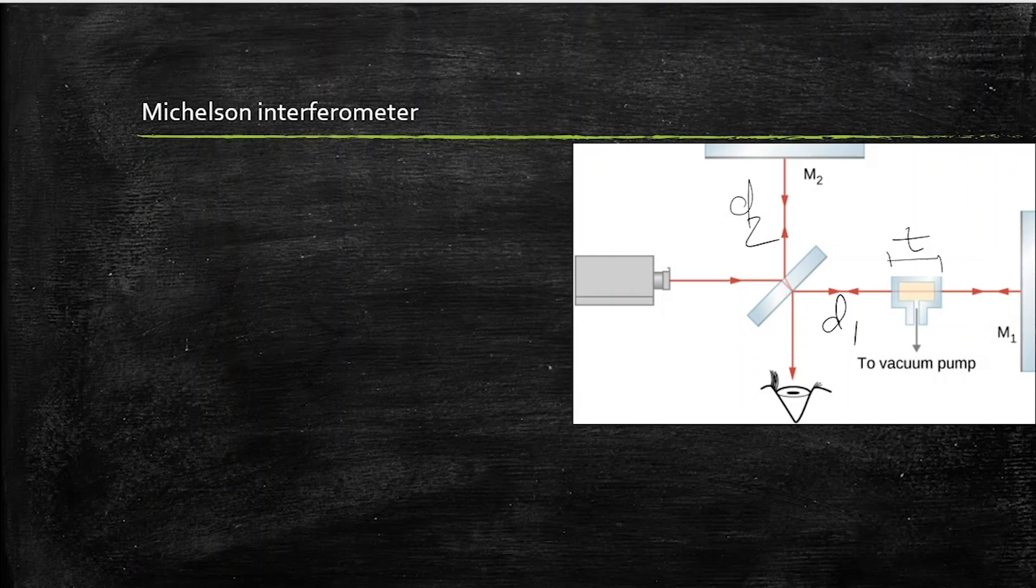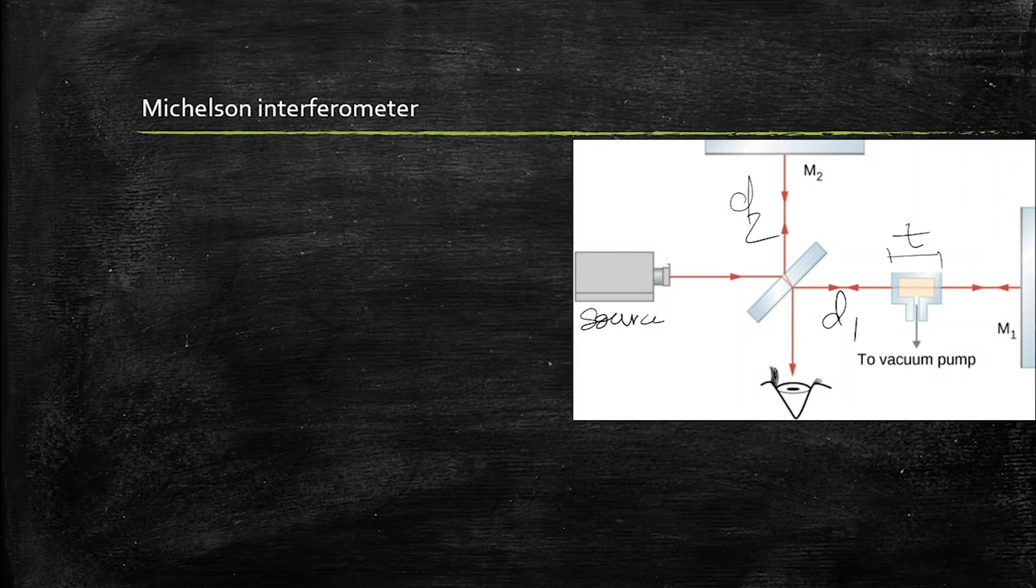In this diagram you can see the source, it's a monochromatic source, so it is emitting a particular wavelength. Now it is a beam splitter.